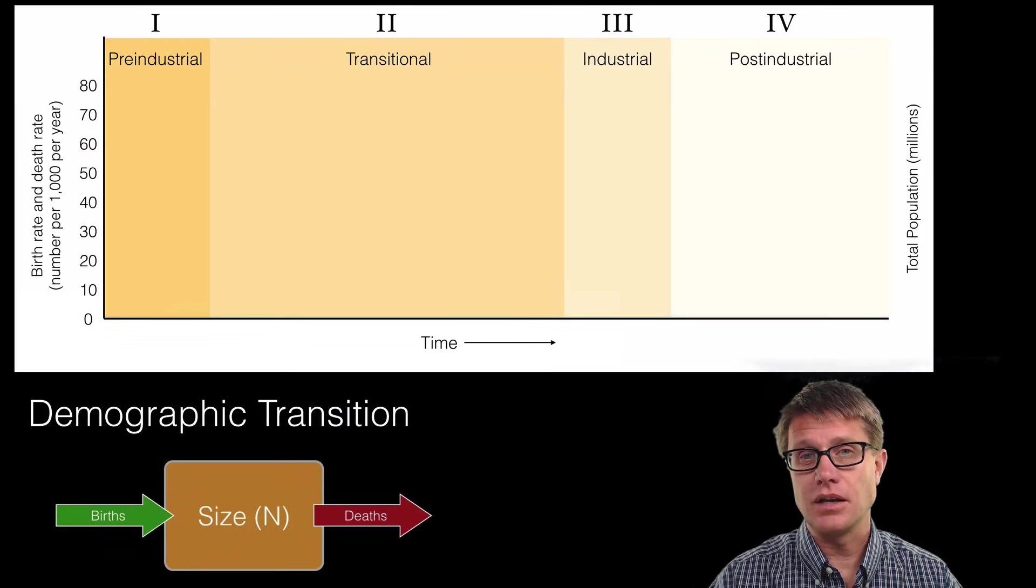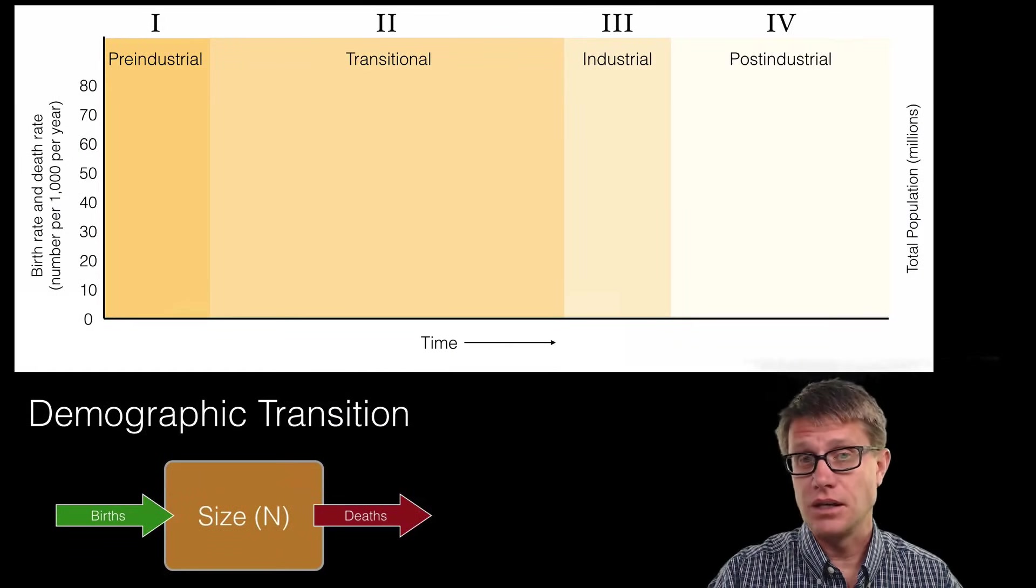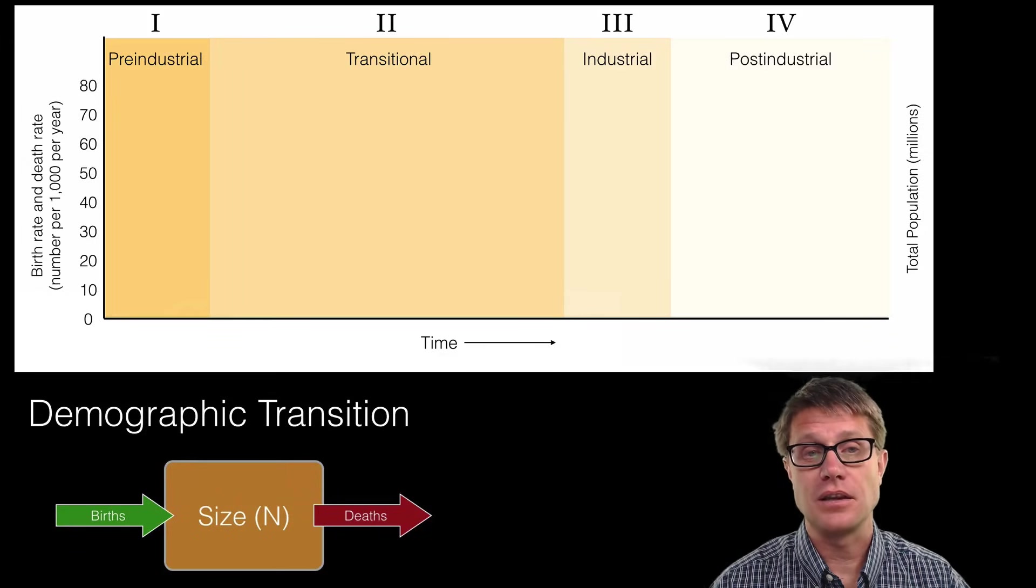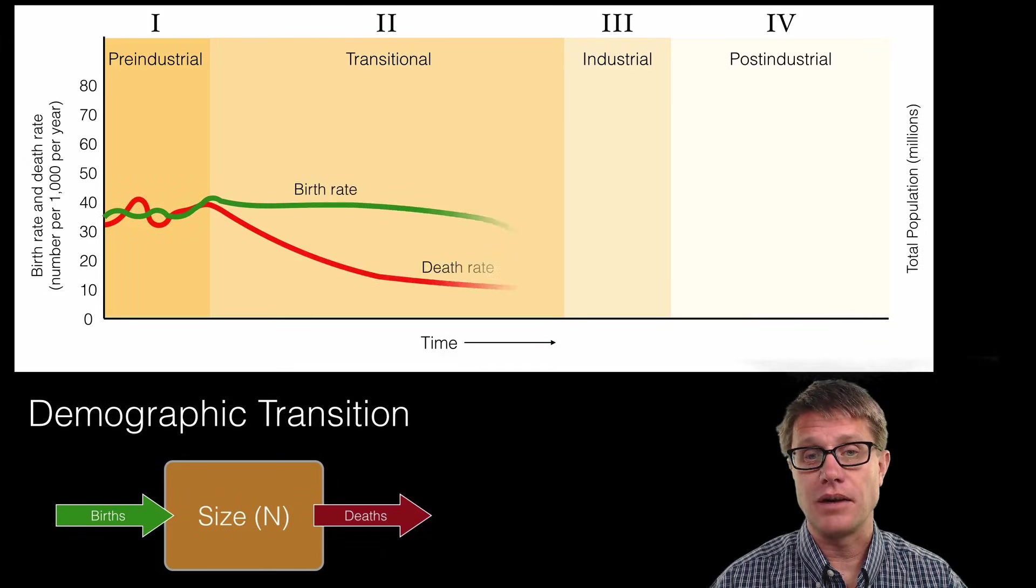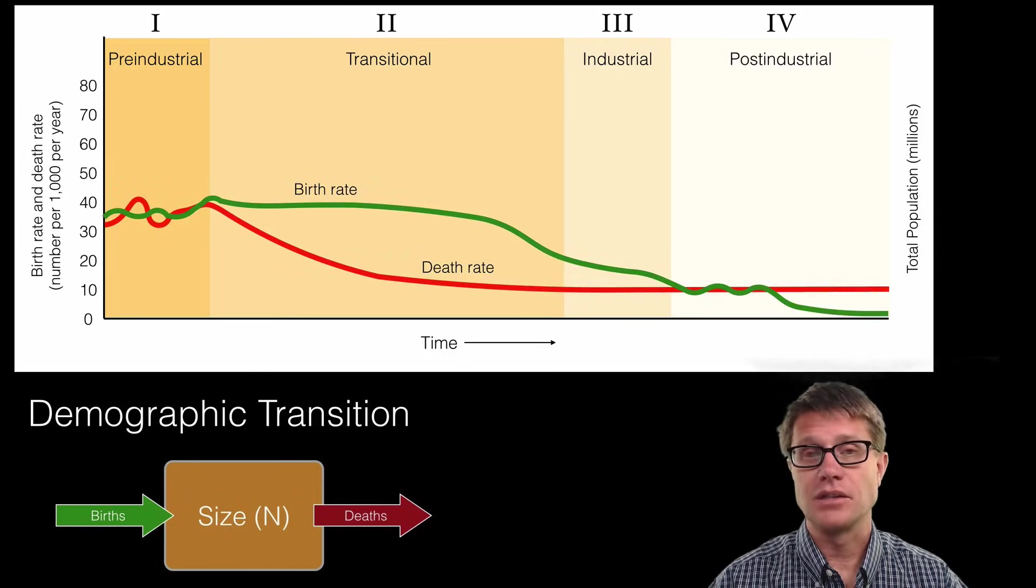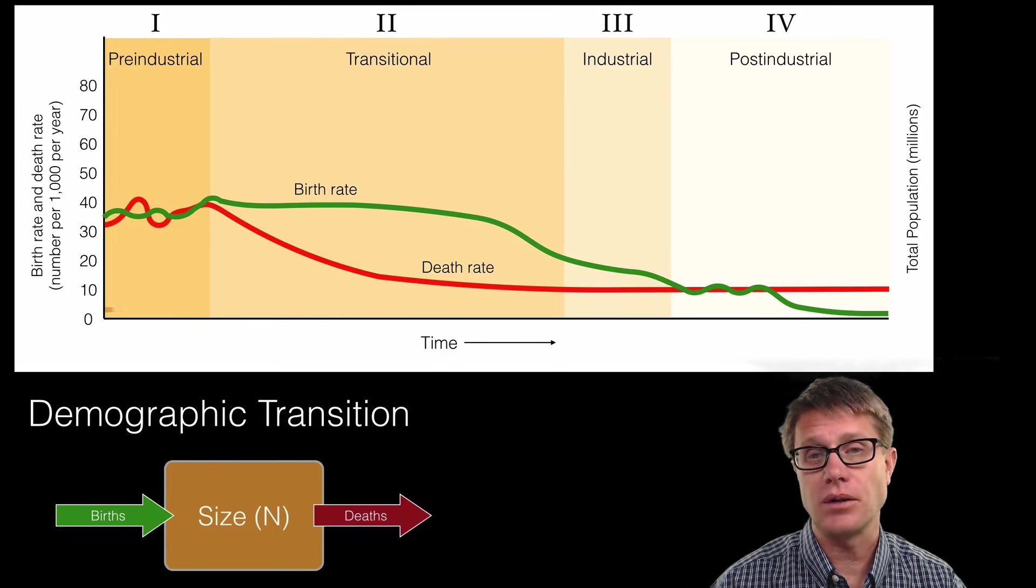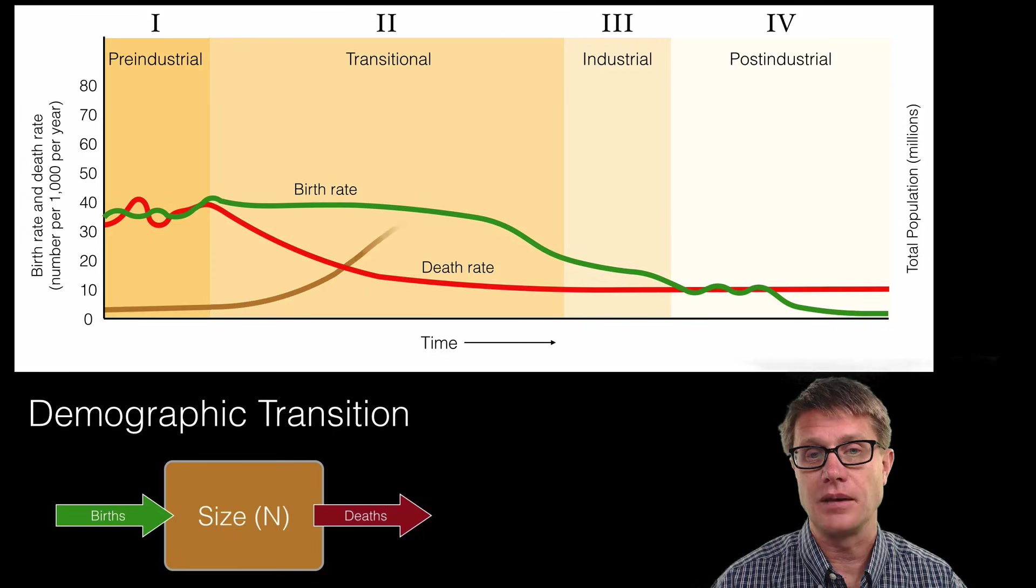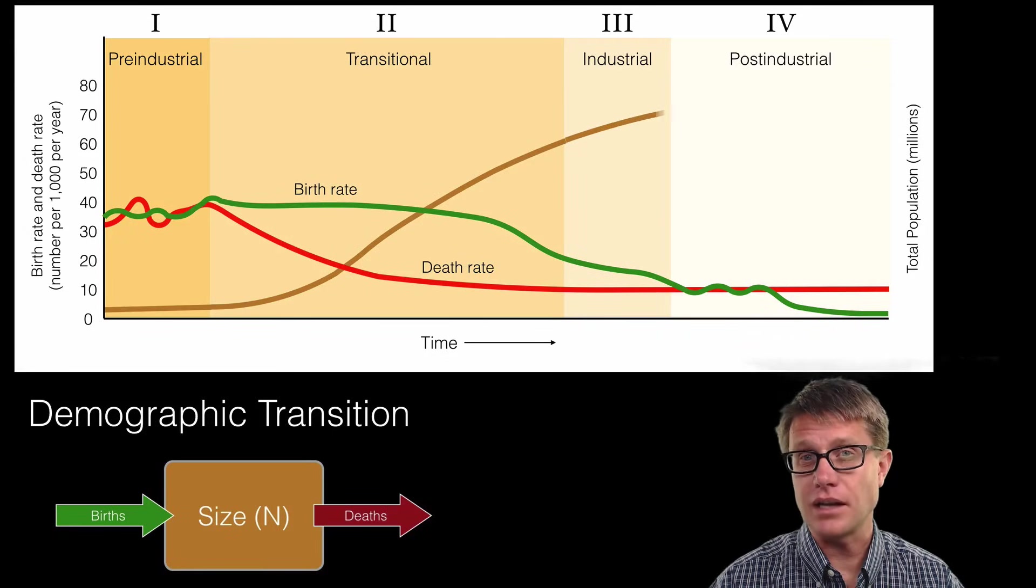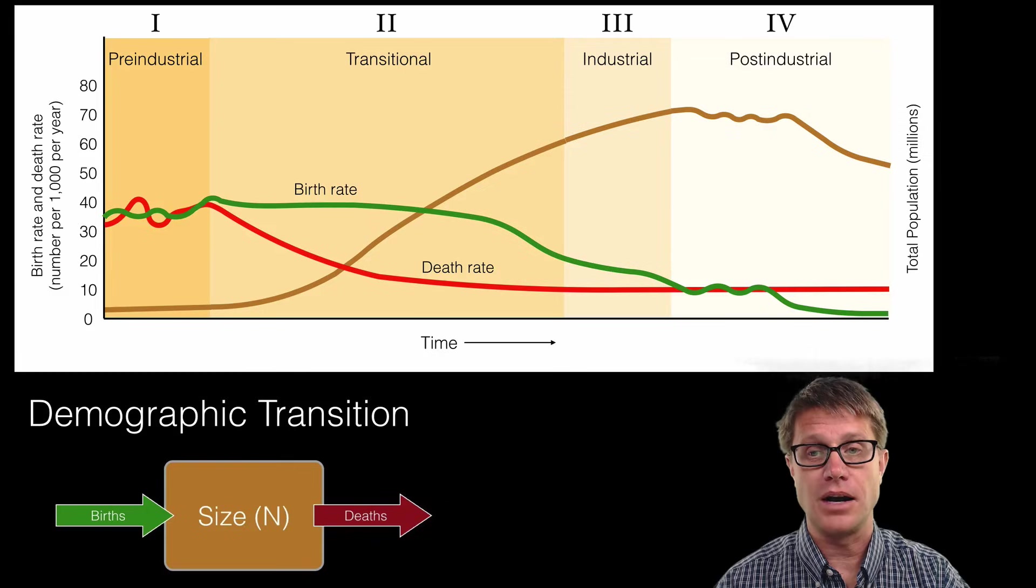And what is going on is we have all these countries going through the industrialization. And we talked about that in the last video. It is this demographic transition. And so what happens is first of all the death rate drops, then the birth rate drops. And so if we are looking at what happens to the population over time, during this transition it will radically increase, then it will stabilize and then it is eventually going to drop off.